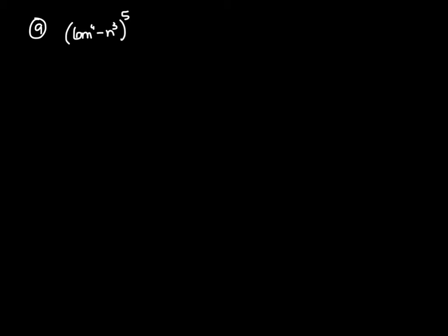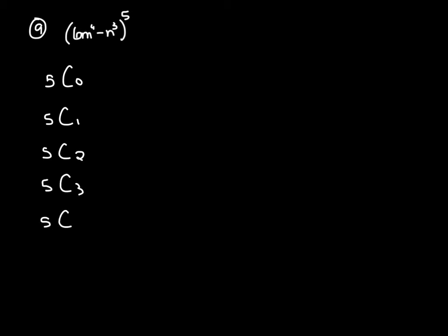Number 9 — they want us to expand this out. I'm going to write going down instead of across because of space. We know that we start at whatever this exponent is, beginning with 5C0, then 5C1, 5C2, all the way until we get to 5C5. Normally we write this going across with addition signs in between each term, but I'm writing vertically here.